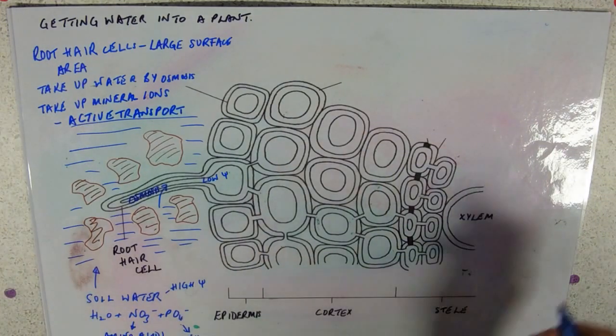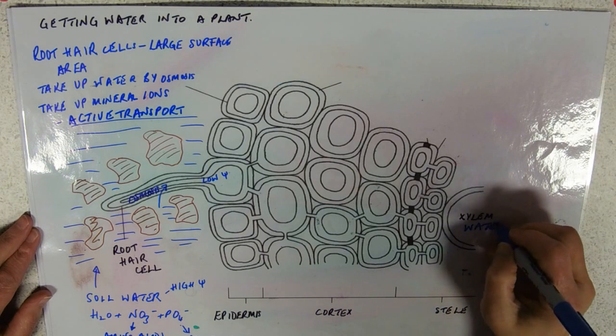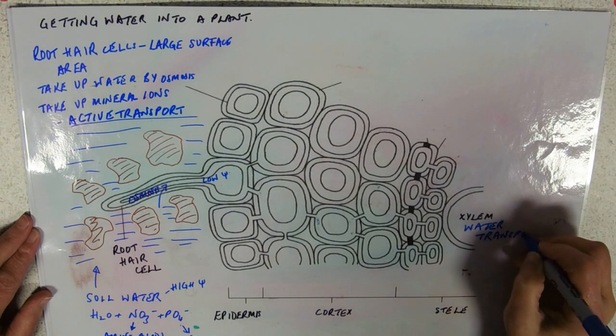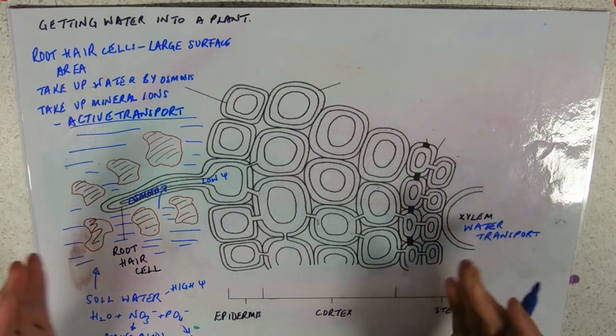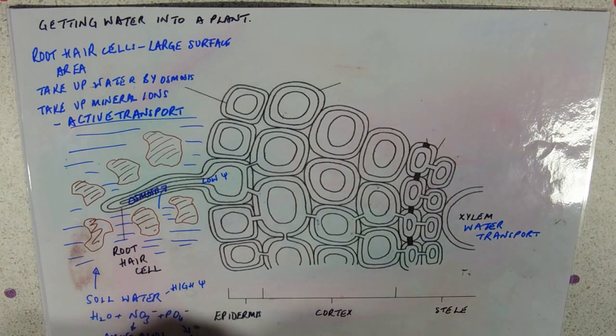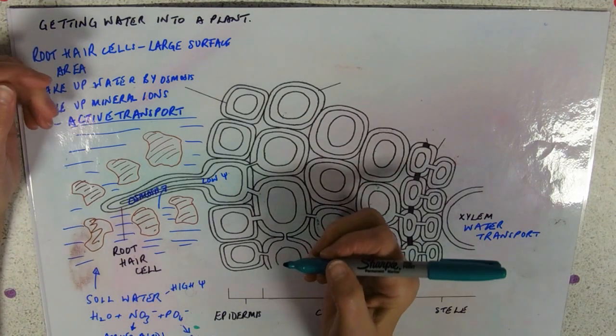Now the other thing that everybody knows is that xylem is for water transport. So we've got to get it across this cortex, which if you remember from the microscope photograph that we just did, it's quite a big place to go through. So we have different pathways that that water could take.